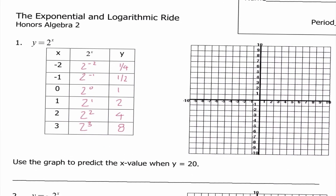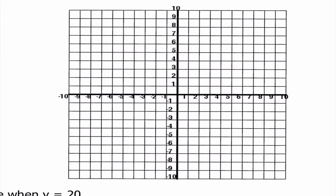I'm going to zoom in on our graph and plot those. Our points were negative 2, 1/4; negative 1, 1/2; 0, 1; 1, 2; 2, 4; and 3, 8. Looking at this graph, it definitely doesn't look linear — we know linear is a straight line. It also doesn't really look quadratic, because it is going in a U shape to the right, but it doesn't appear to be going in a U shape to the left. In fact, it looks like it's getting closer and closer to the x-axis.